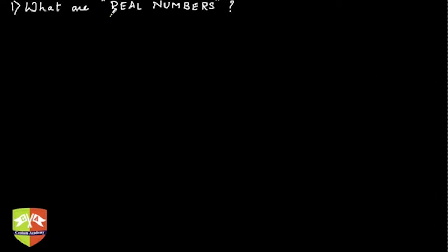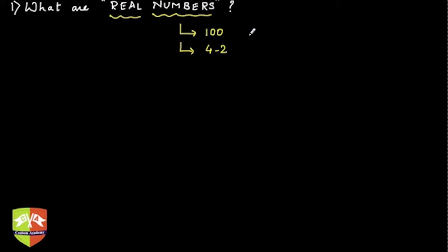The first question that comes to my mind when I encounter the phrase 'real numbers' is: why are we calling them real numbers? Numbers, as we all know, appear in every sphere of life. When Virat Kohli hits a century, we know that number. When France defeats Brazil 4-2 in a football World Cup match, four goals were scored by France and two by Brazil. Even your phone number helps you reach a person.